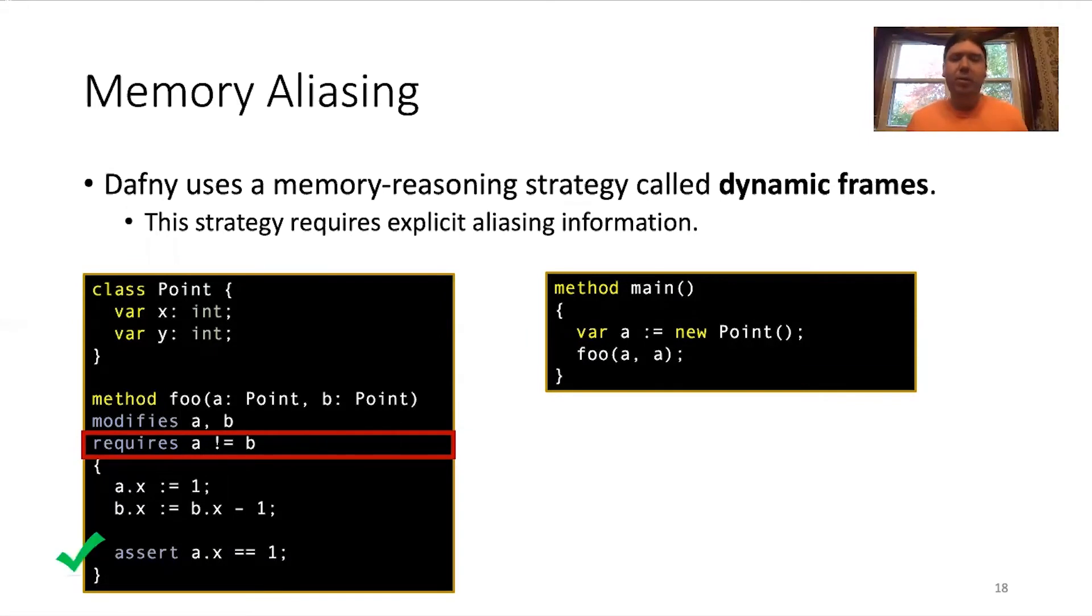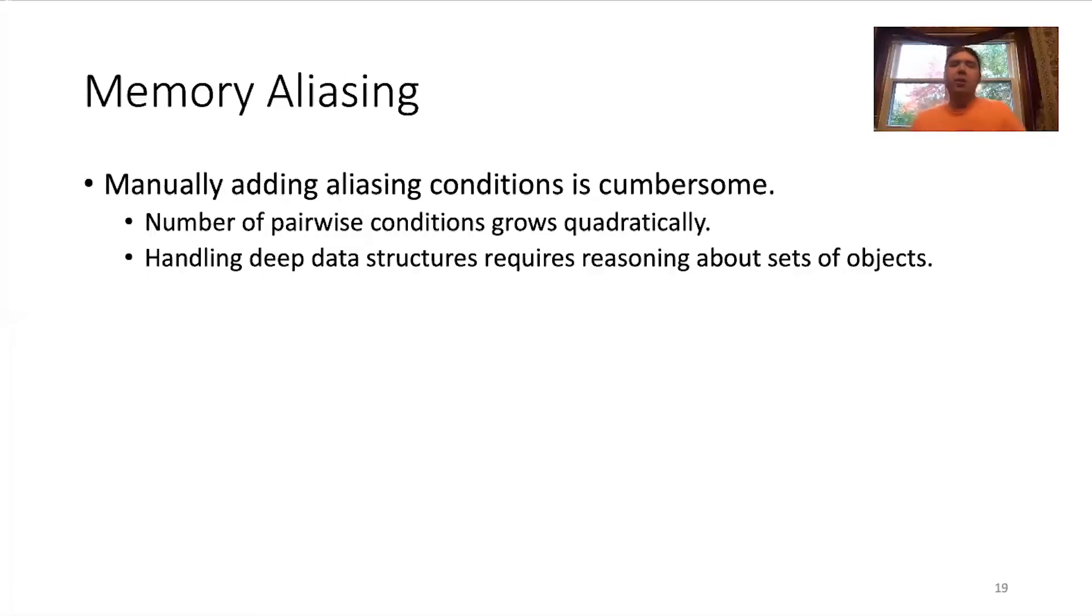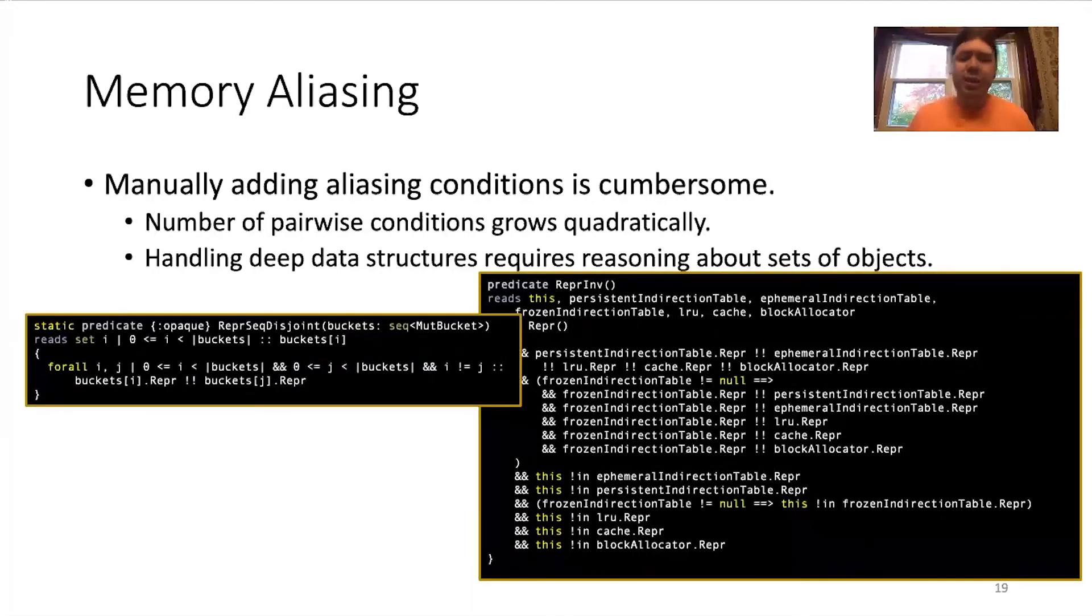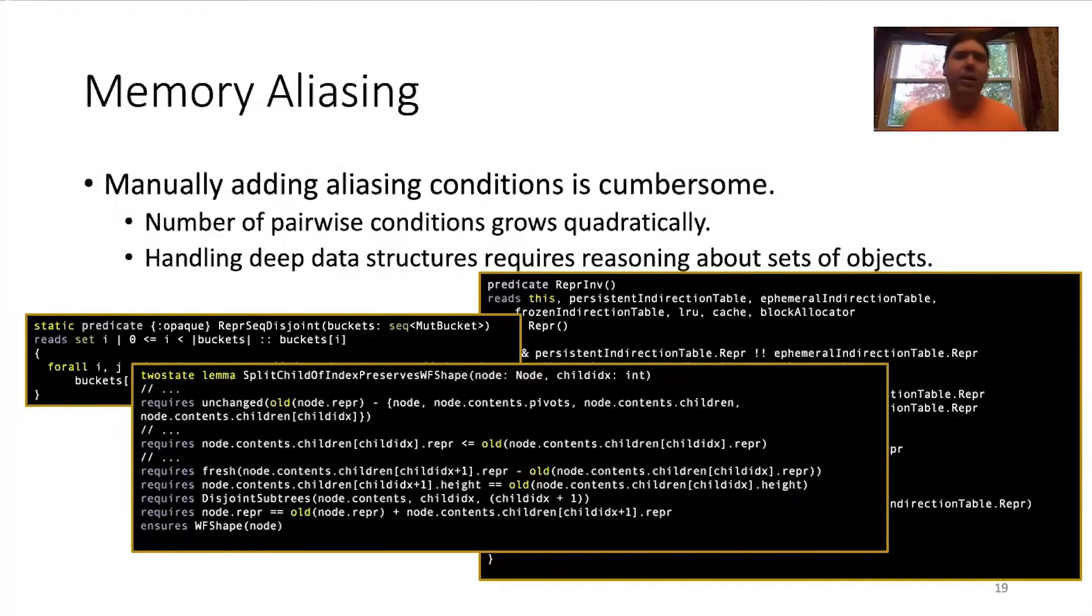One thing we can do to fix this is to add a precondition that a and b are pointing to different objects. And if we do that, Dafny will be able to prove this assertion quite easily, although it would have to reject this call, which would now be illegal. Now, this doesn't sound so bad. However, the thing to consider is that pairwise conditions like these will grow quadratically as the number of objects grows. And also, once we start handling deeper data structures like trees, we'll have to start talking about sets of objects. And so, in practice, the aliasing conditions look less like this, and more like this, which is referenced maybe 100 times in our code base, or it'll look like this, or look like this. So, it's very cumbersome.